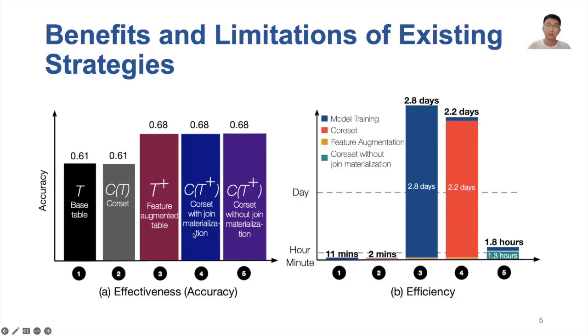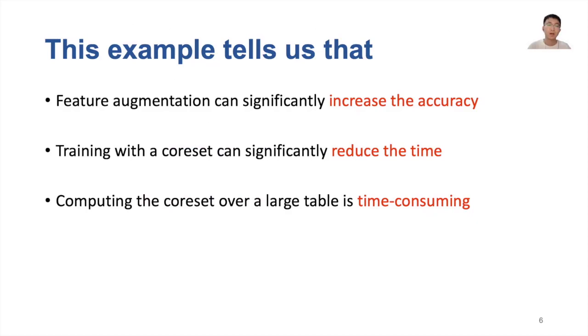Besides, we can also train with the augmented table or the coreset of the augmented table. These are shown as method 3 and method 4 in this page. We can observe that although training with the augmented table can achieve a much higher accuracy, it takes a much longer time, because as we know, the process of feature augmentation consists of one-to-many or many-to-many joins. Therefore, the size of the augmented table is likely to be much larger than the base table. This example tells us that the feature augmentation can significantly increase the accuracy, and training with the coreset can significantly reduce the time.